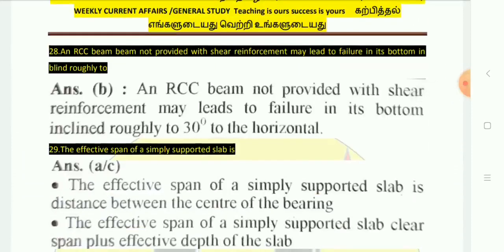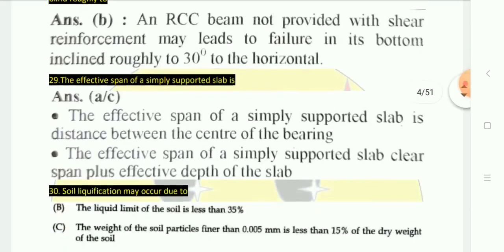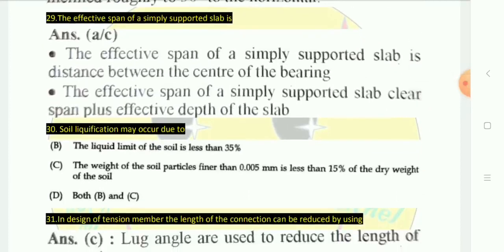Question 28: An RCC beam not provided with shear reinforcement may lead to failure. For RCC, the failure angle is 30 degrees to the horizontal. For PCC, the failure angle is 45 degrees. So RCC = 30 degrees, PCC = 45 degrees. The effective span is clear span plus effective depth of the slab.